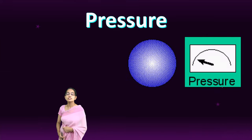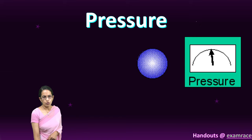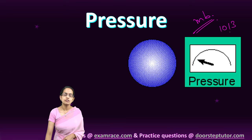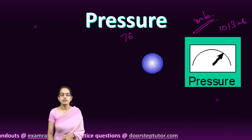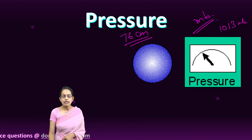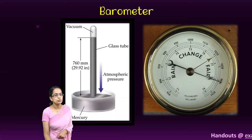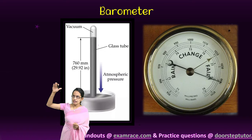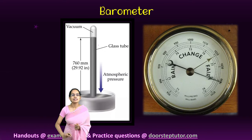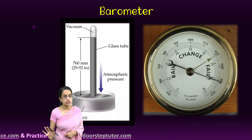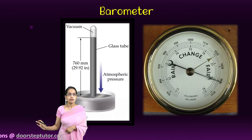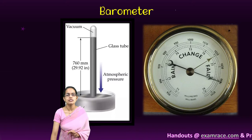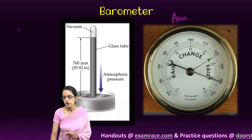Pressure is measured in millibar. Normal sea level pressure is 1013 millibars, equivalent to 76 centimeters of mercury column. A mercury barometer works by inverting a mercury-filled tube on a platform — when air exerts pressure, the mercury rises. However, the mercury barometer is not portable, so a substitute is the aneroid barometer, which is more compact.